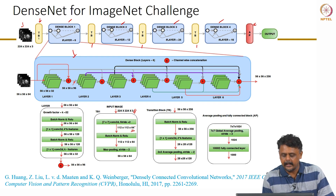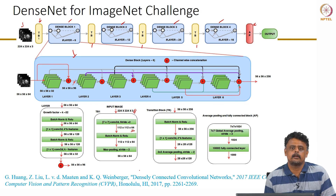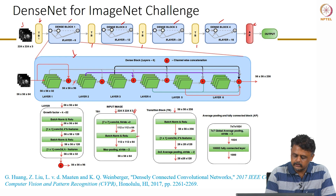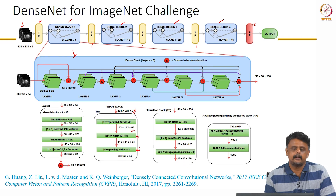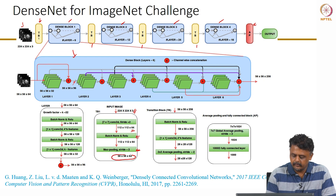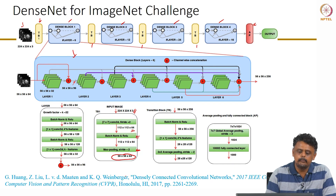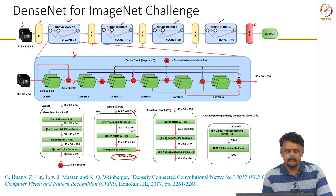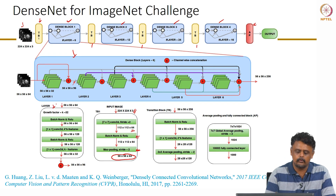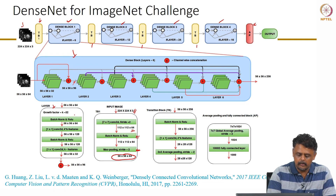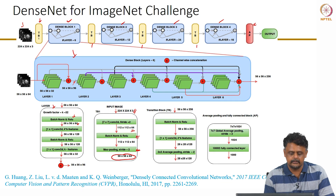This input is subjected to a 7×7 convolution with stride 2, giving 64 feature maps — that is 2K because K=32 for this architecture. Followed by batch norm, ReLU, and then max pooling with stride 2, which produces 56×56×64 feature maps, i.e., 64 channels of size 56×56. This is the input to the first dense block.